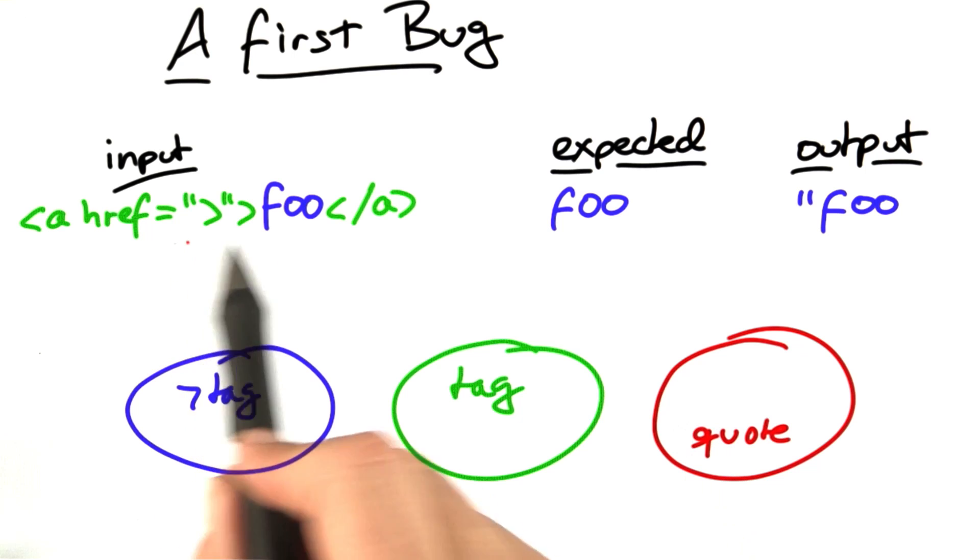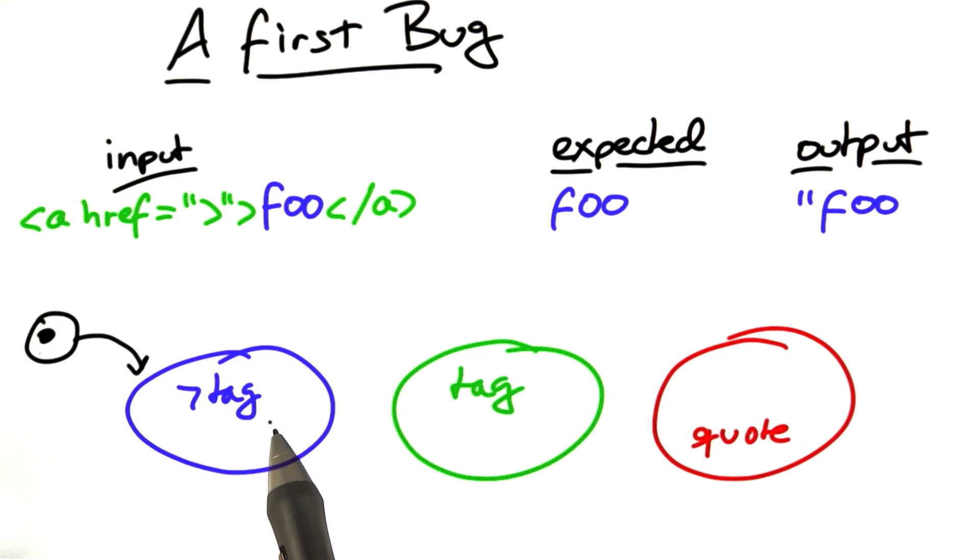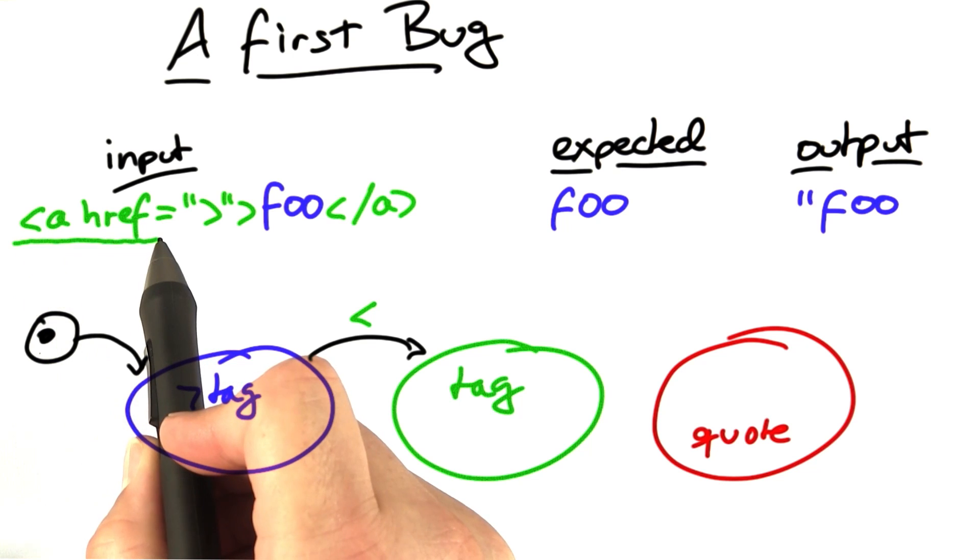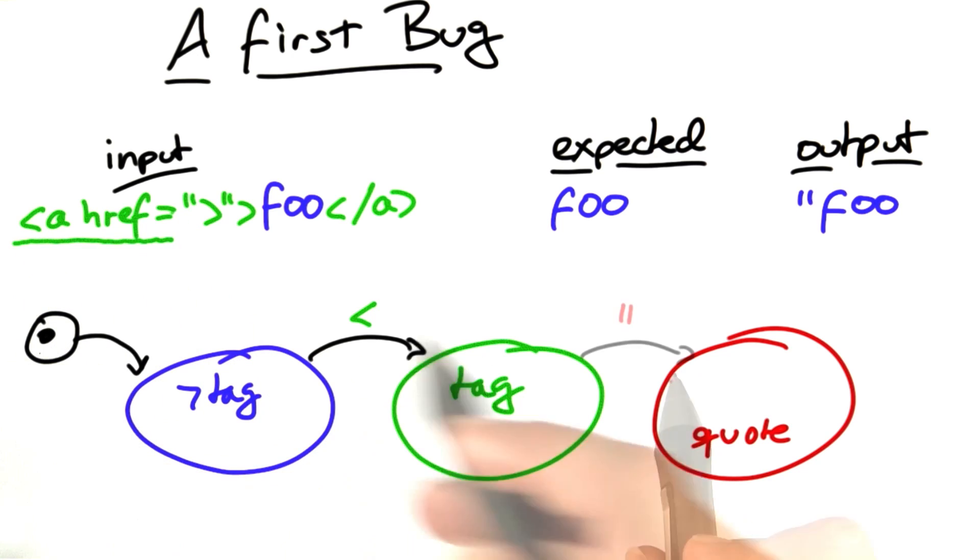which will handle anything that's within quotes. Just as before, we start in a non-tag mode, and when we see a less than sign, we go into tag mode. This is what we do when we process this very input, and we stay in this mode until we find a quote. That's when we go in quote mode, and we stay in quote mode until we find another quote.